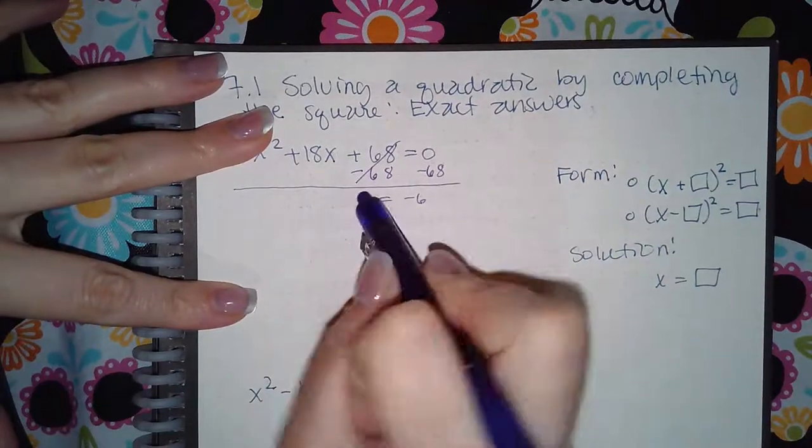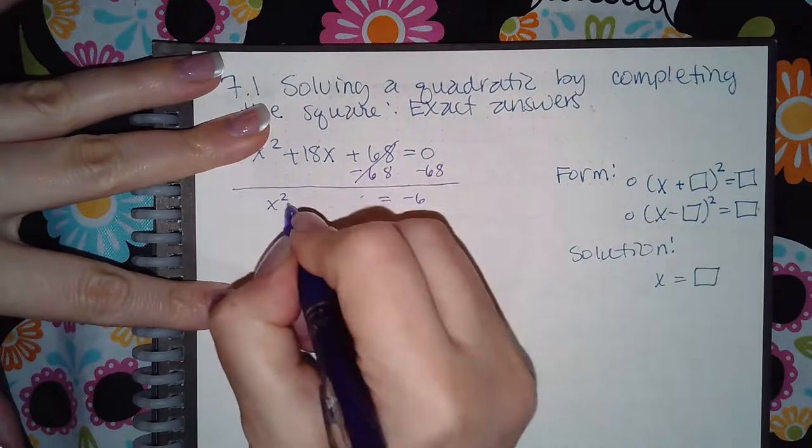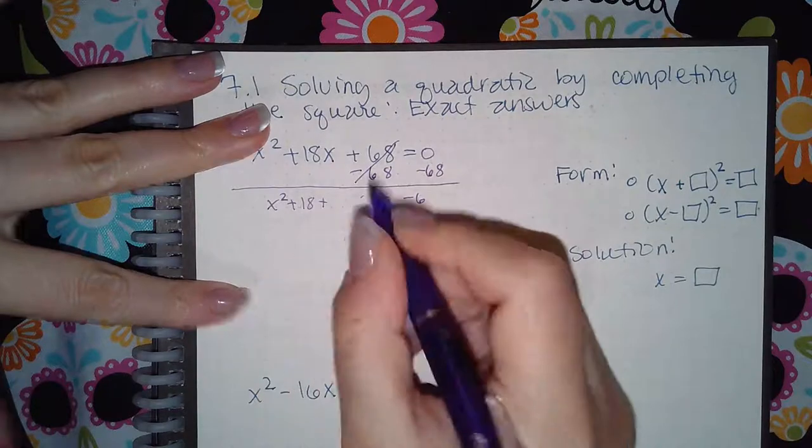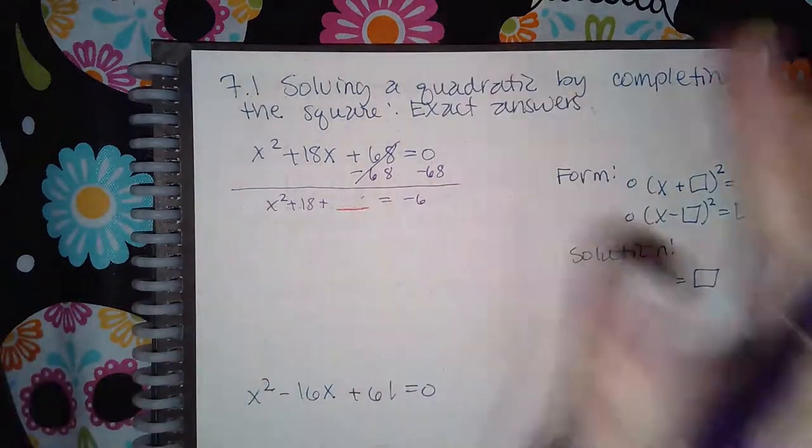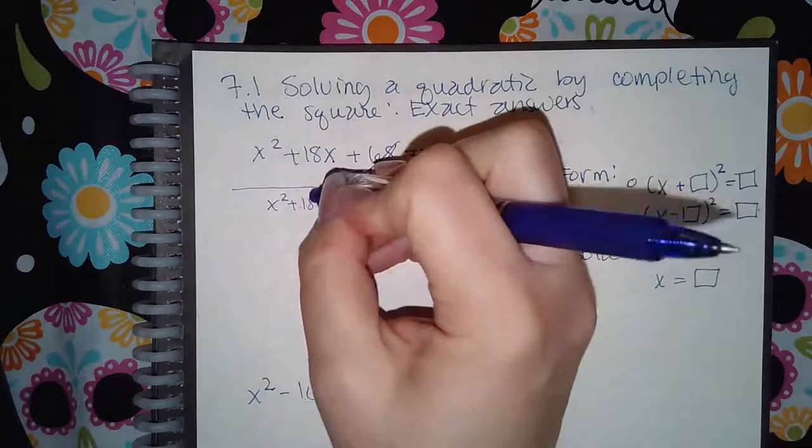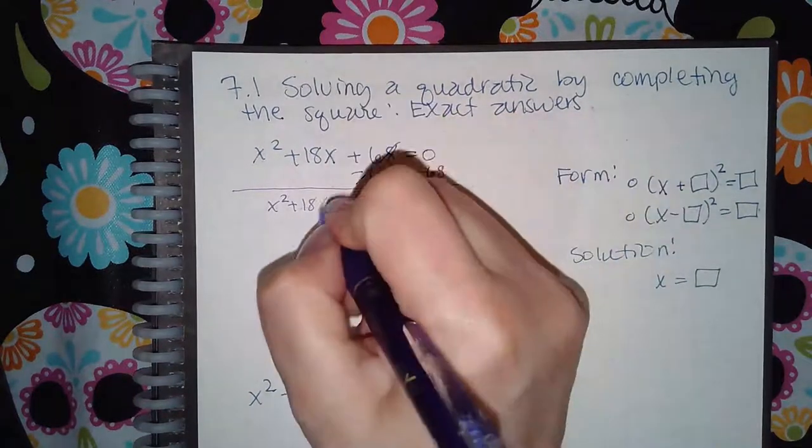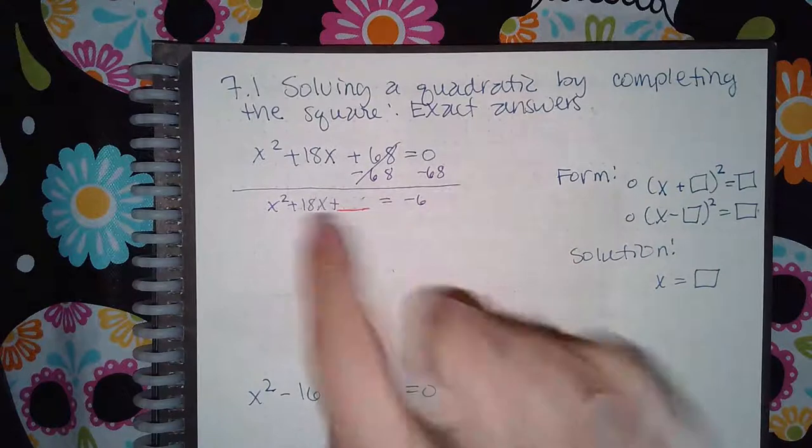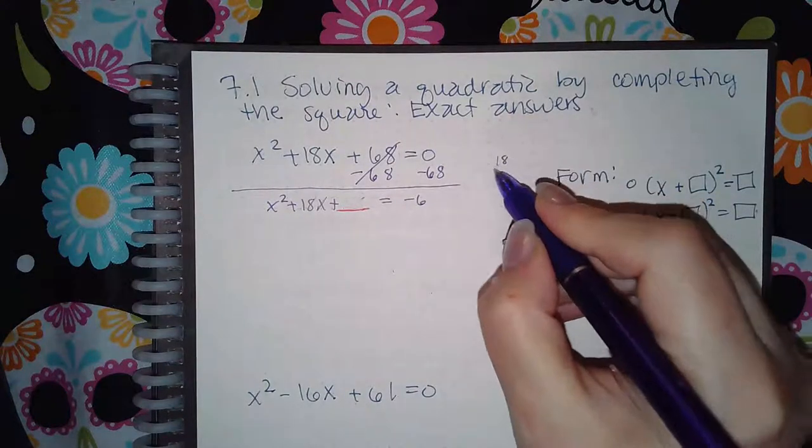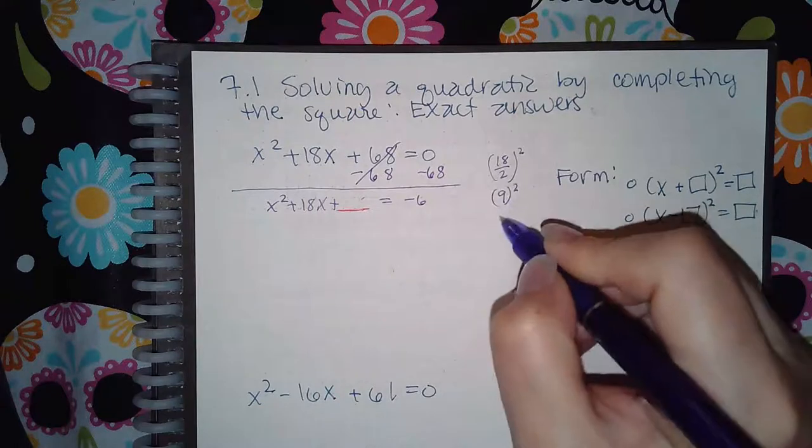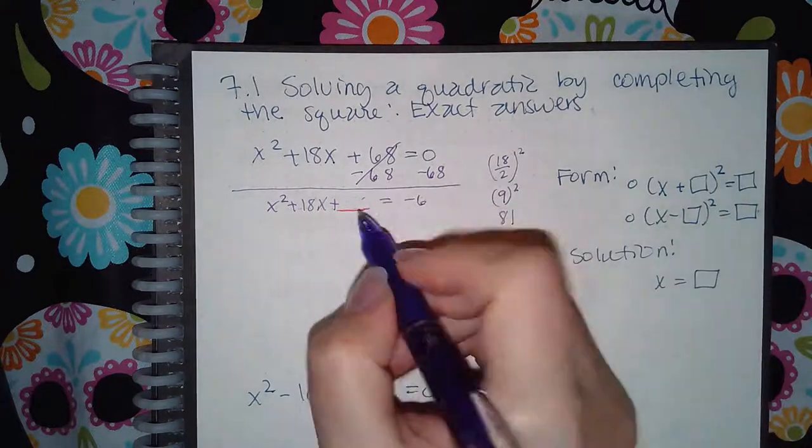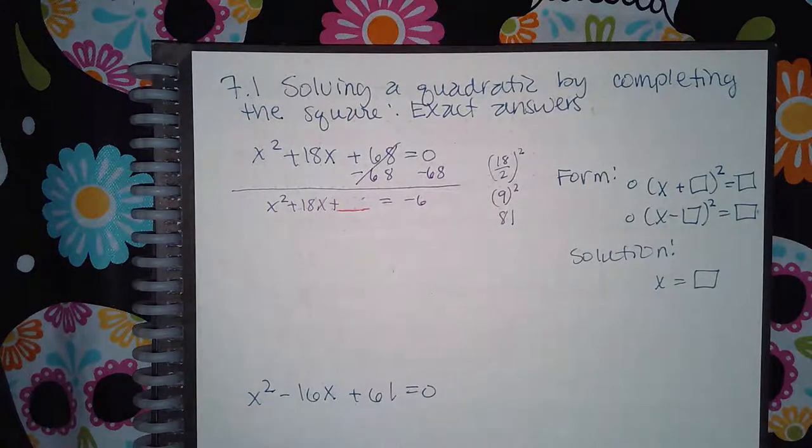So what is that number that I have to add here? Okay, so we take B which is a positive 18, so 18 over 2 and square it. That's 9 squared which is 81.